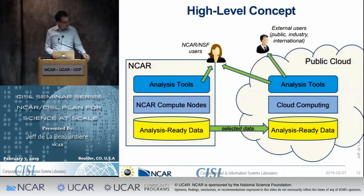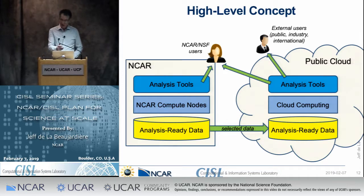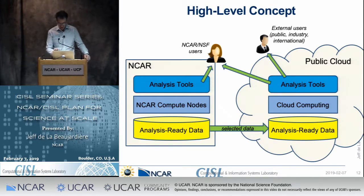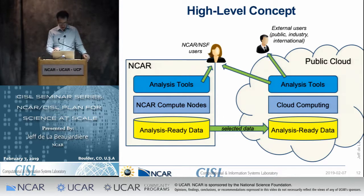I'm not a graphic artist. My initial high-level diagram is much more crude, but here it is. Imagine you have NCAR or NSF-funded users — they can connect to NCAR, use some nice analysis tools which we've deployed, compute on our computing infrastructure, and look at some analysis-ready data. And then some of that data we maybe copy to the public cloud. It costs money to put data in the cloud, so we might not be able to put all of our data there, but at least some key high-value, high-interest data sets in the cloud — where public, industry, or international users can use cloud computing resources and ideally the same suite of analysis tools.